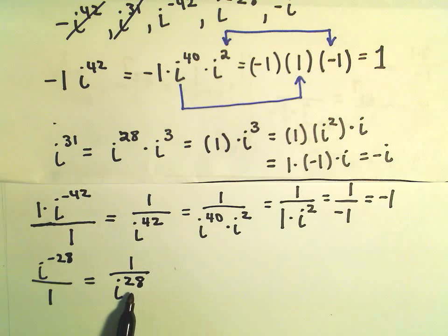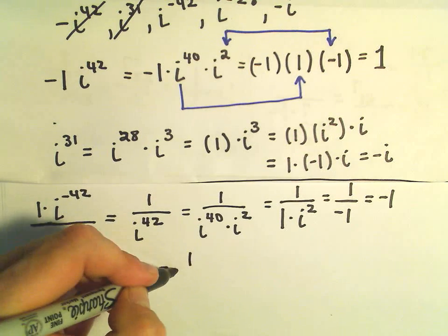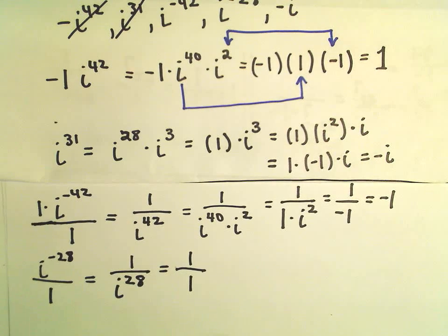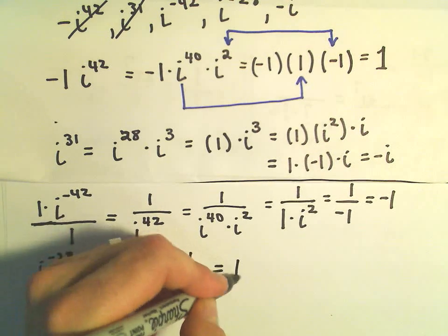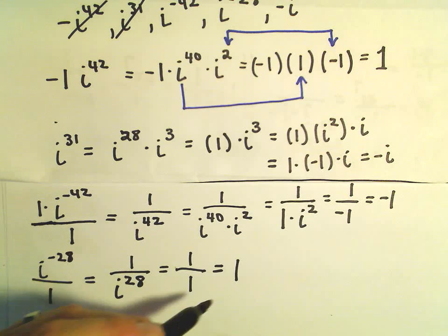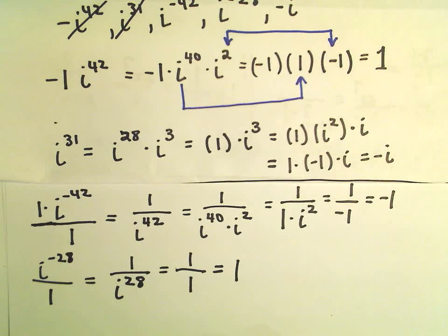And in this case, is 28 a multiple of 4? Well, yeah, 28 is a multiple of 4. So it turns out that i to the 28th is just going to give us 1. So i to the negative 28th is just again a fancy way of writing the number 1.